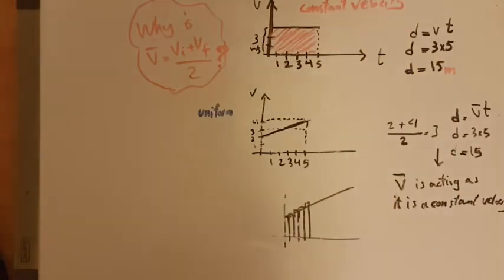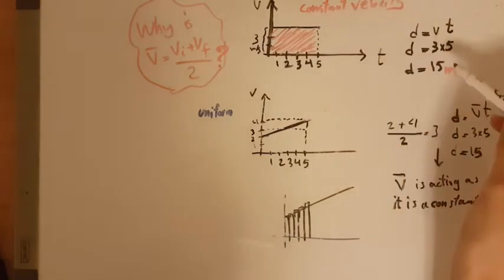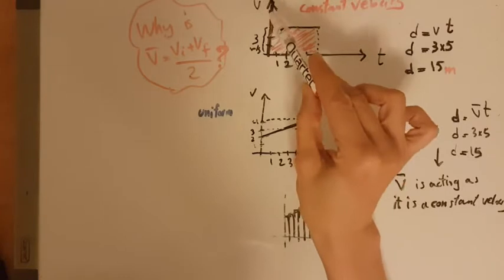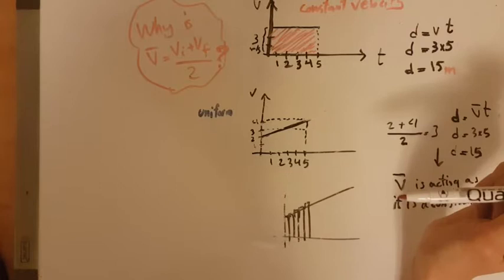You can find this rectangle's area. And this area that I have colored in here would be actually equal to the displacement from the VT graph, velocity time graph.